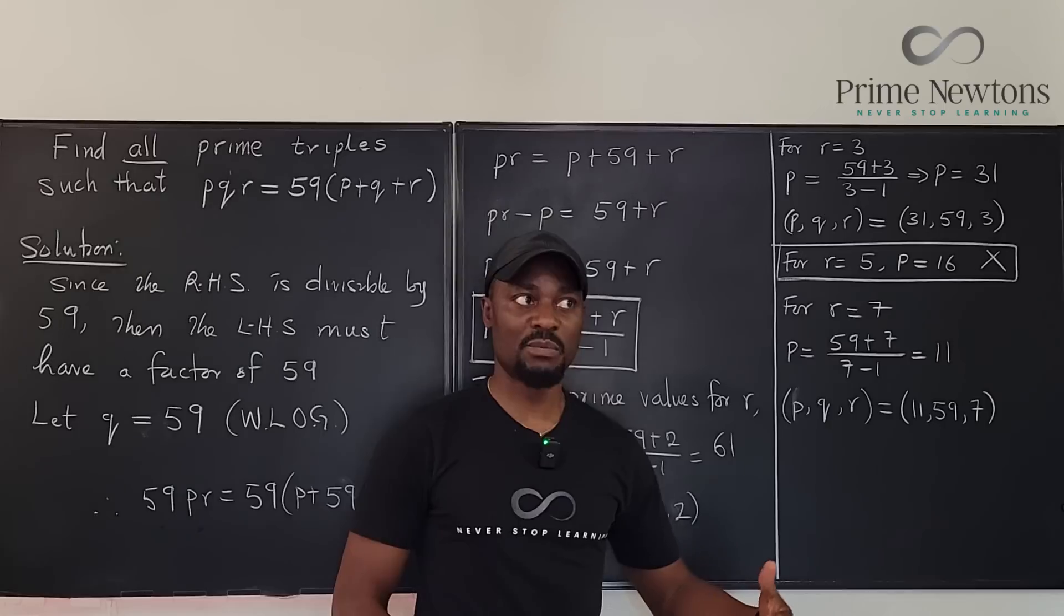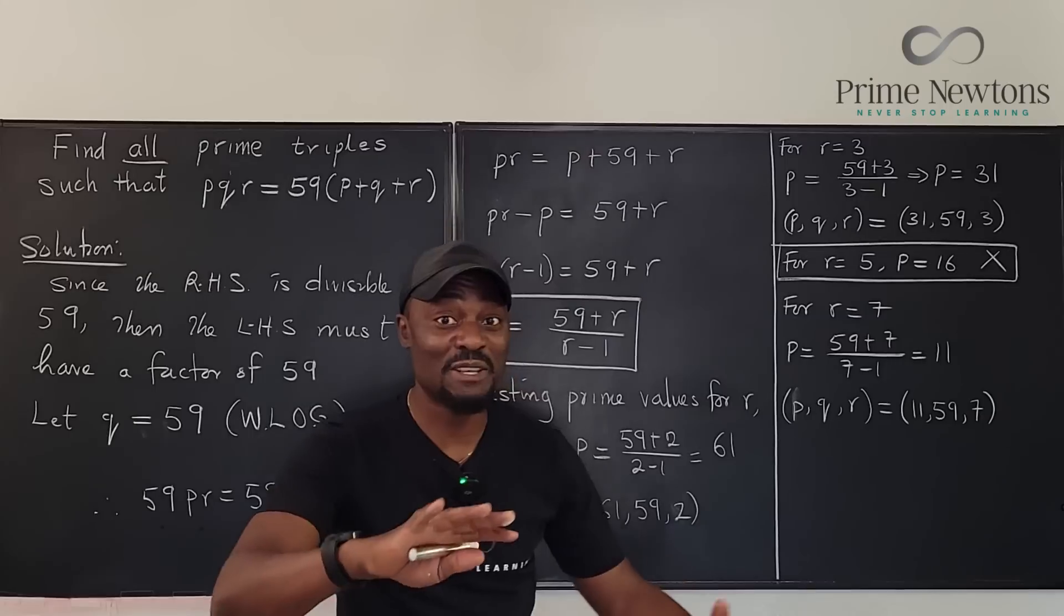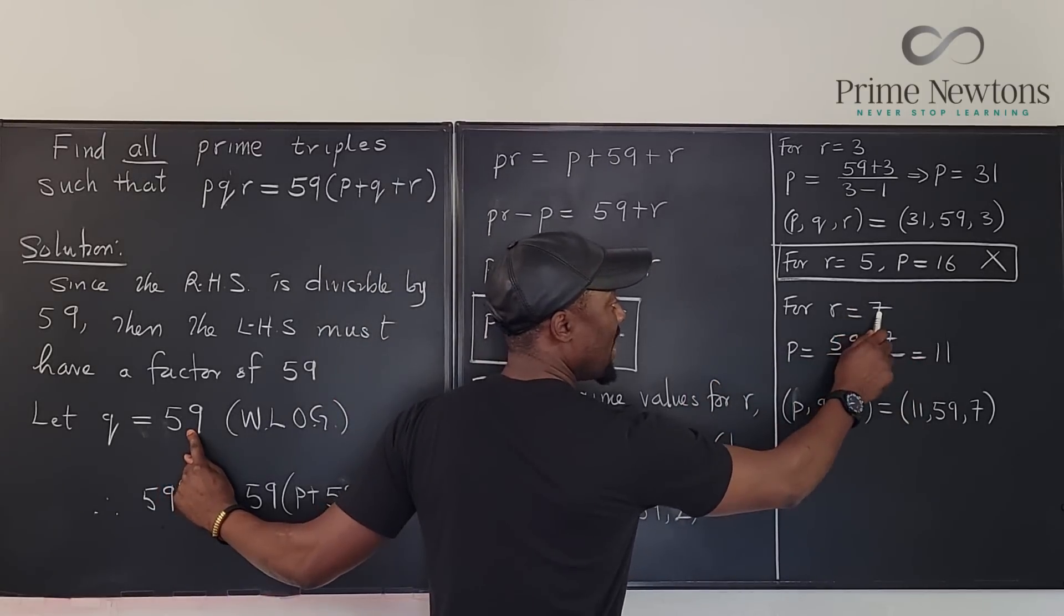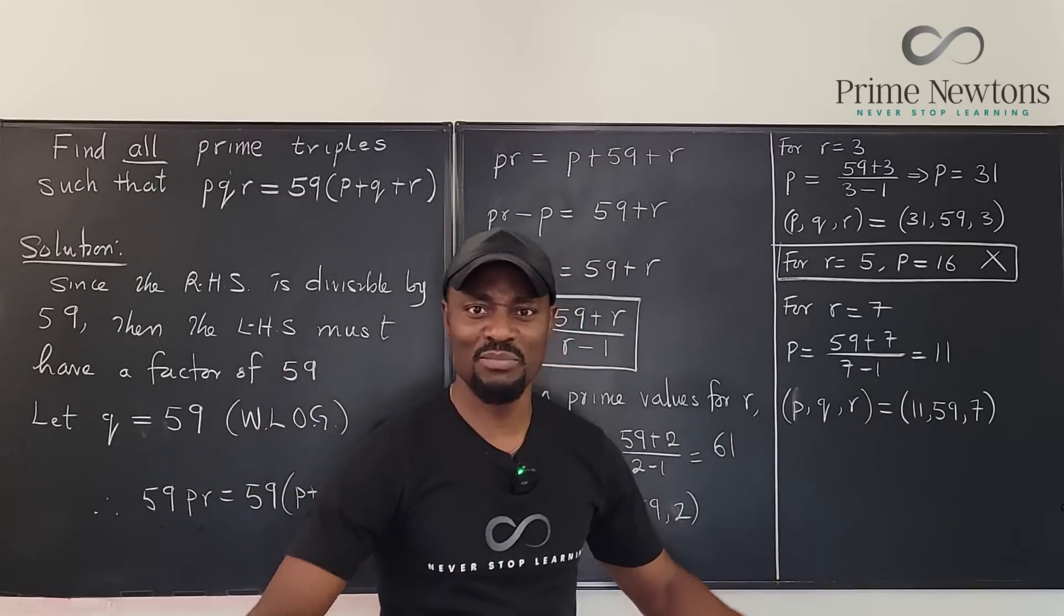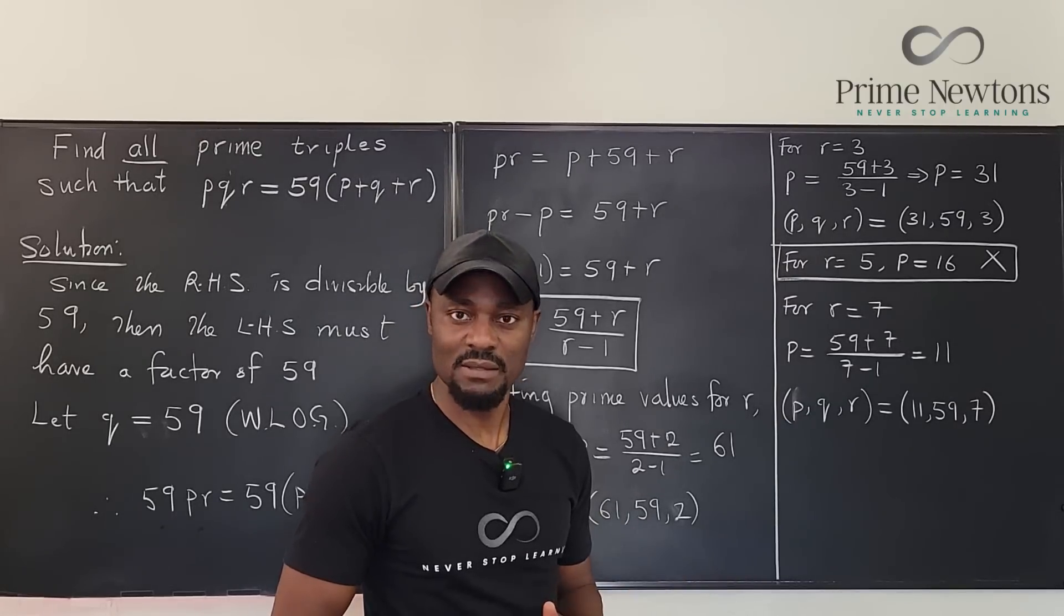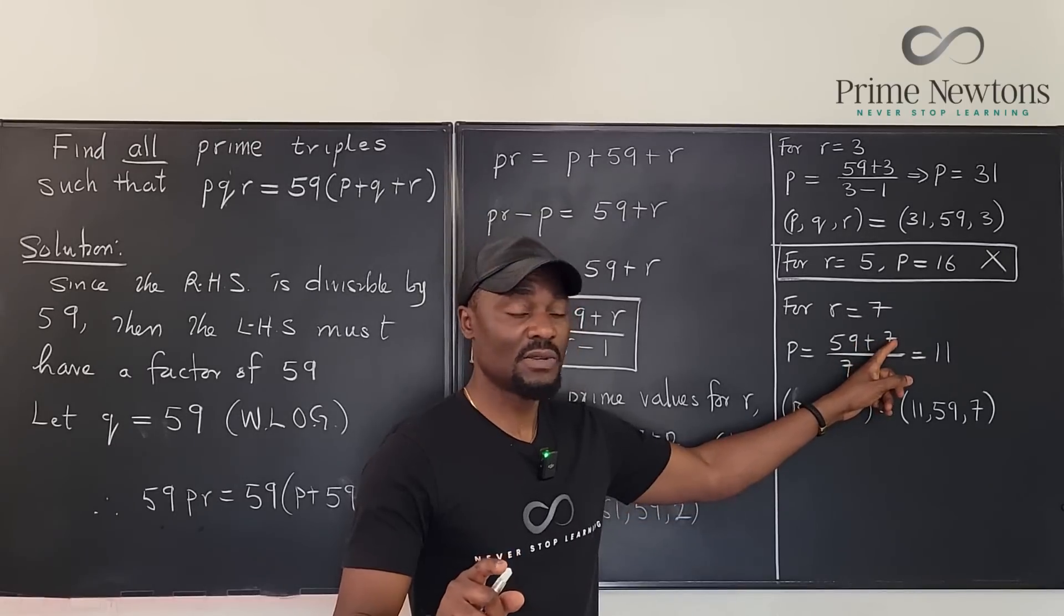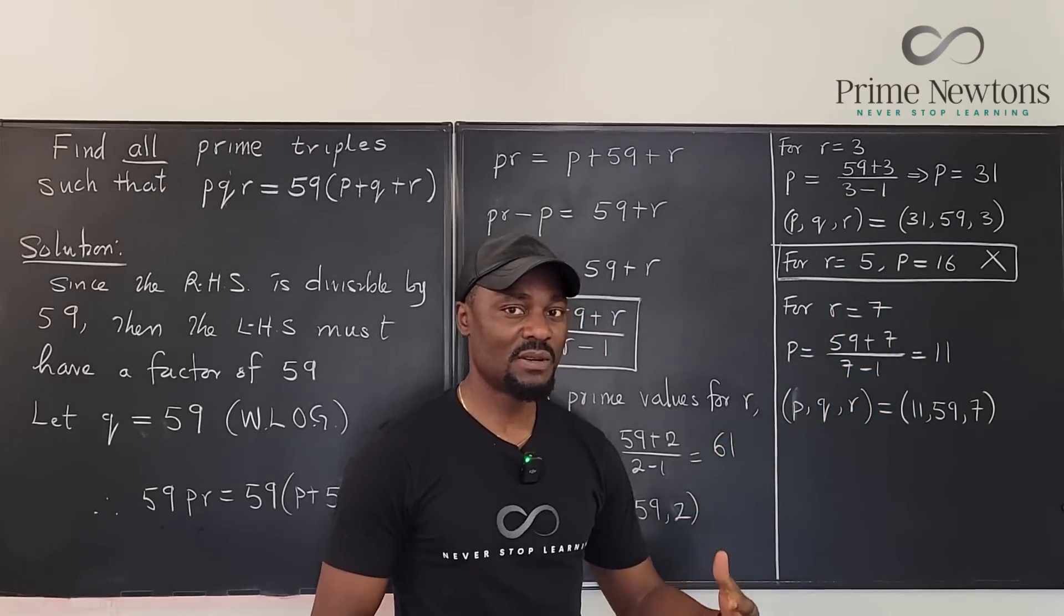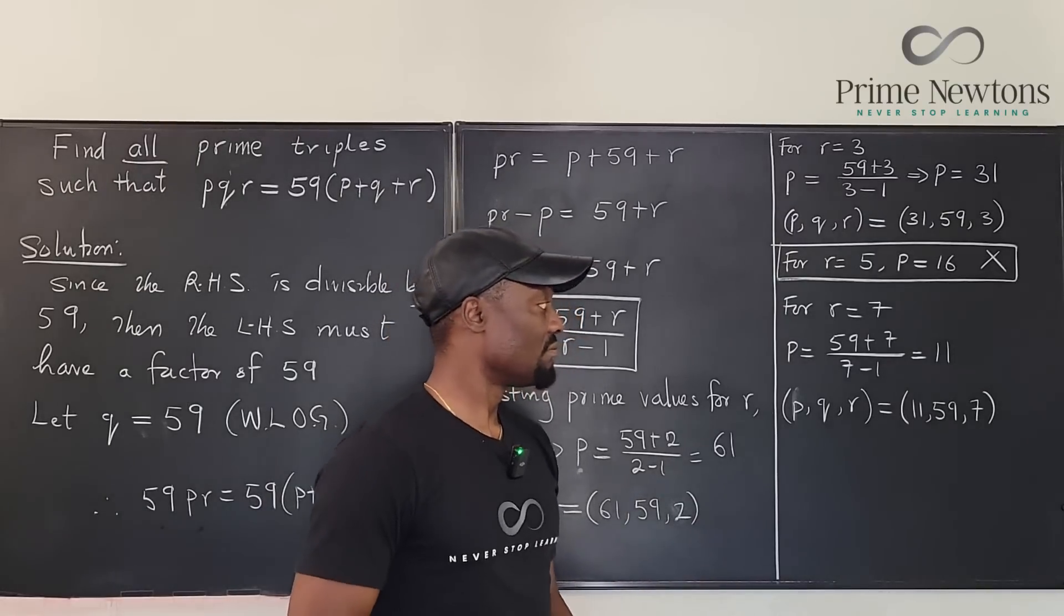So let's try another number. The next prime number after 7 is 11, but that's already 11. Remember we said it doesn't matter which one is which. So if as long as you have 59, and you now pick your R to be 11, it means your P is going to be 7, which means you're just repeating the process. Any other prime number after? Let's just try a random prime number that is beyond 11. Let's do 13. If we try 13, 59 plus 13 is going to be 72, 72 divided by 12 is 6. 6 is not a prime number. So it appears that if you keep going beyond that, you're going to get numbers that are not prime.